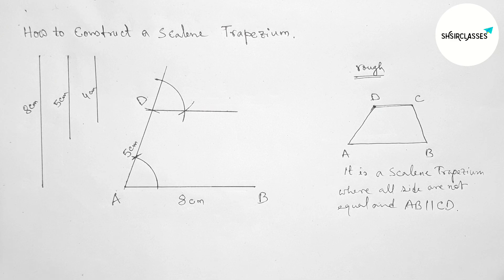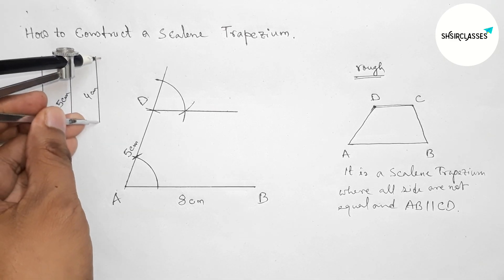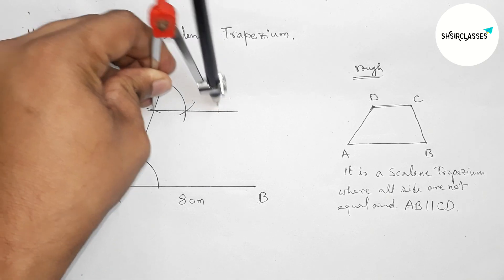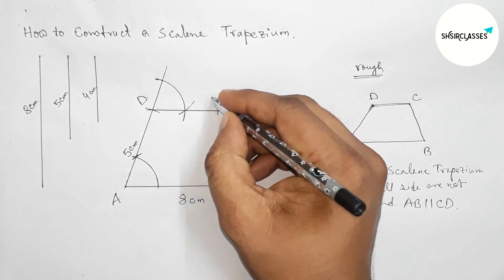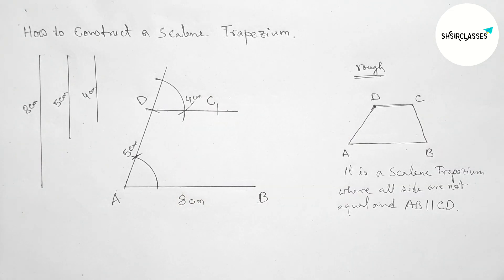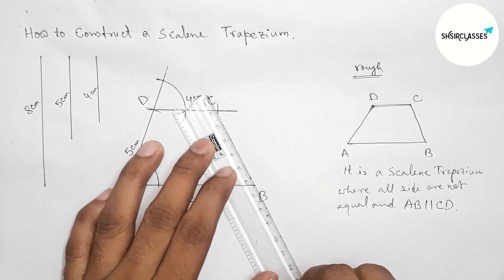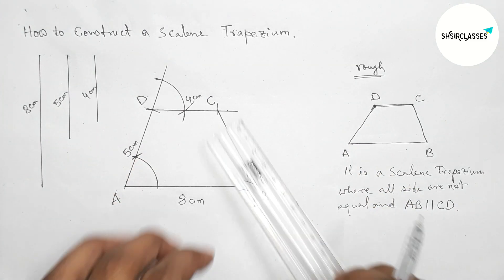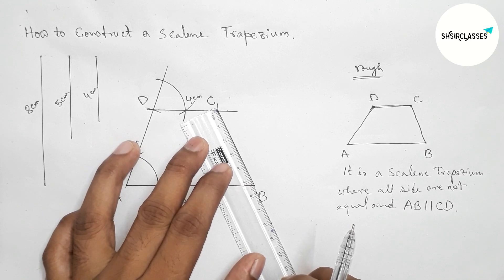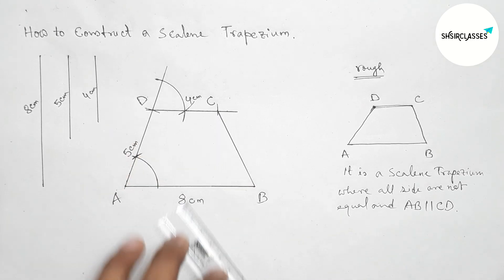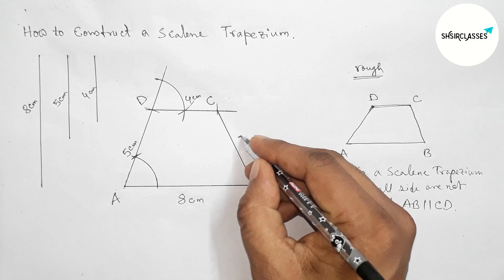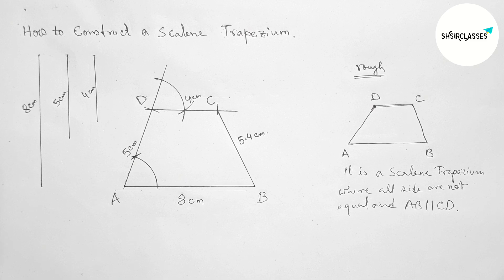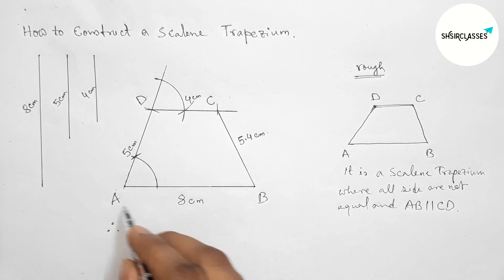Next, taking the length 4 centimeters and putting the compass on point D and cutting here. Taking point C here — so DC is 4 centimeters. Now joining the side BC and measuring it — this is approximately 5.4 centimeters.